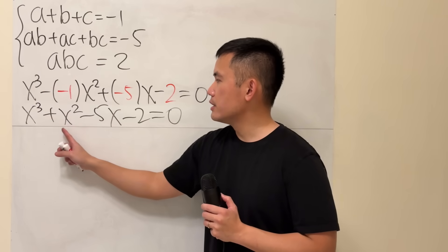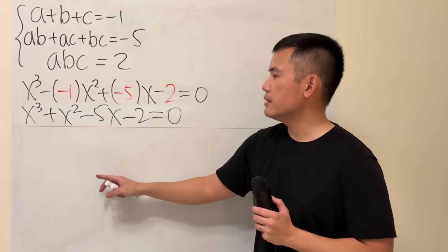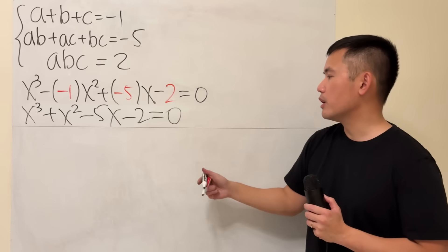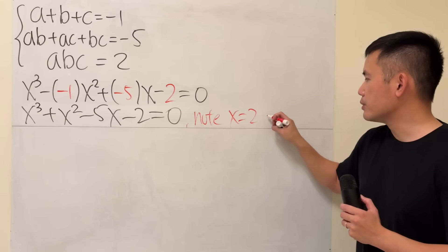2 cubed is 8, 2 squared is 4. So 8 plus 4 is 12. 5 times 2 is 10. 12 minus 10 is 2. Minus 2 is 0. So X equals 2 works.